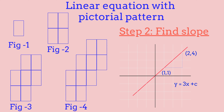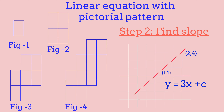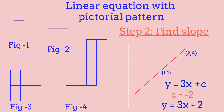Our equation now looks like y equals 3x plus c. To complete it, we need to find the constant c by satisfying each row. If we do 3 times 1, we get 3, so to get y equals 1 we need to subtract 2 — giving us y equals 3x minus 2. Confirming: 3(1) minus 2 equals 1 ✓, 3(2) minus 2 equals 4 ✓, 3(3) minus 2 equals 7 ✓, 3(4) minus 2 equals 10 ✓. Every point is confirmed, so we've finished the problem.